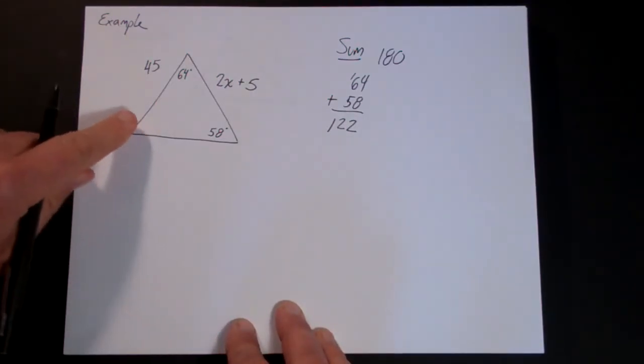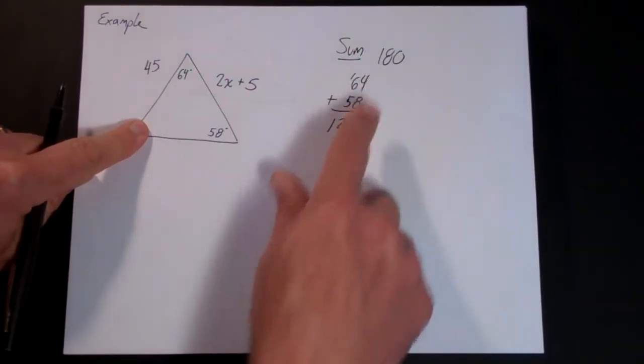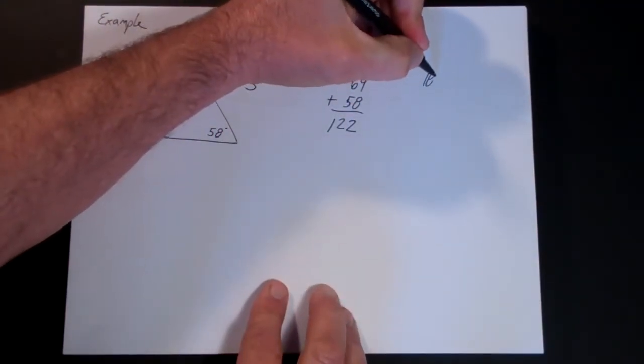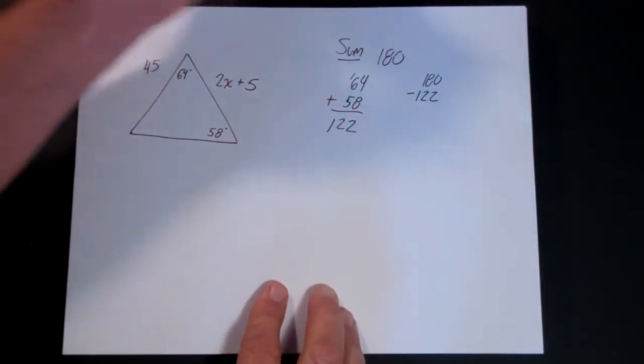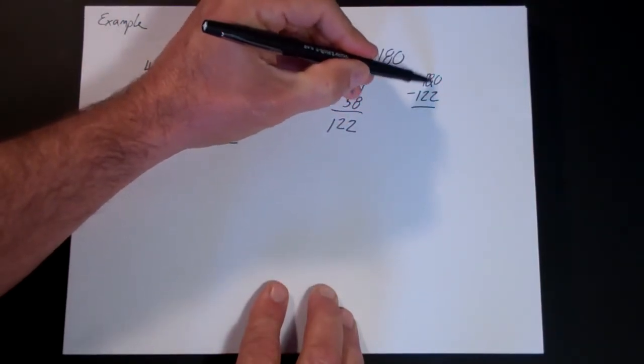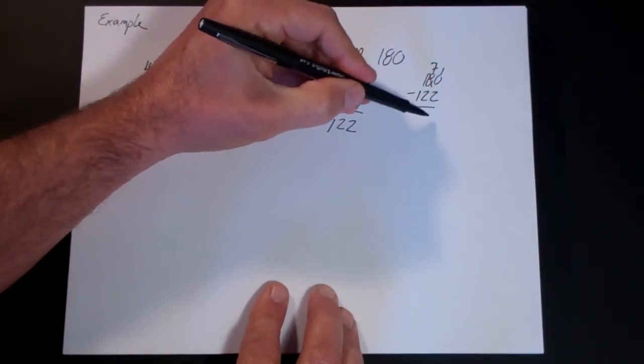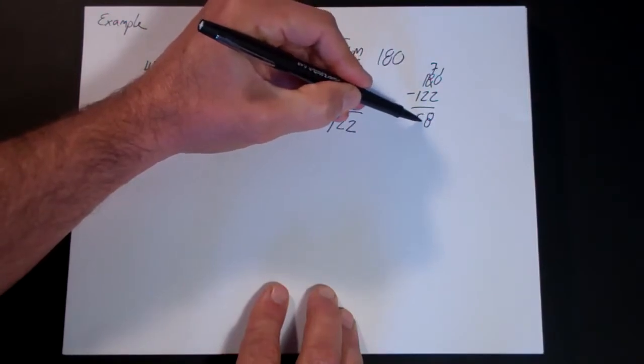And then the third angle has to add up to 180, so we can go 180 minus 122. Then that's 7, 0, 10, that's 8, that's 58 degrees.